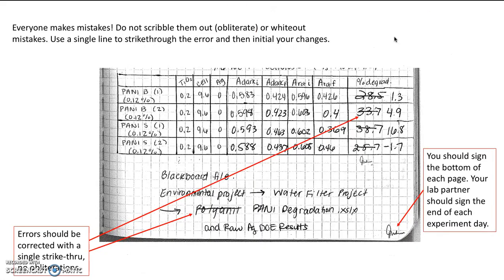Everyone makes mistakes, but do not scribble them out in your lab notebook or use whiteout. You should use a single line to strike through the error and then initial your changes. So here this student made some wrong calculations and so she crossed out the wrong answer and put the correct answer to the calculation there. Same thing here just in writing, instead of writing the whole word out she decided to abbreviate it so she just used a single strike through to cancel that.